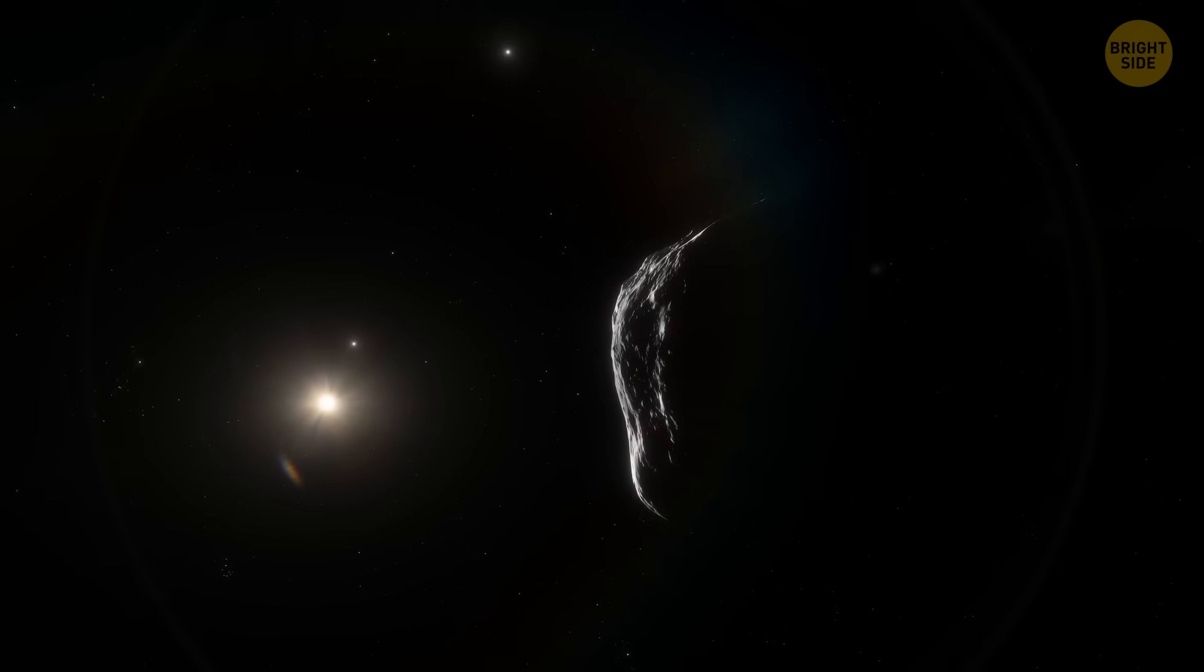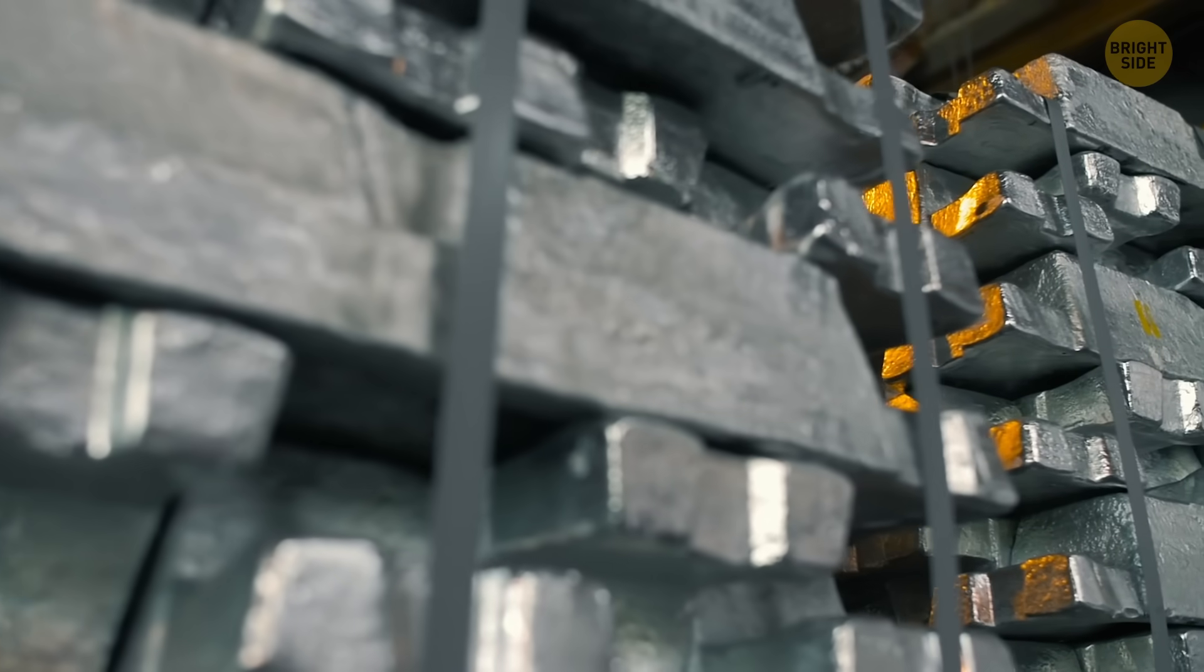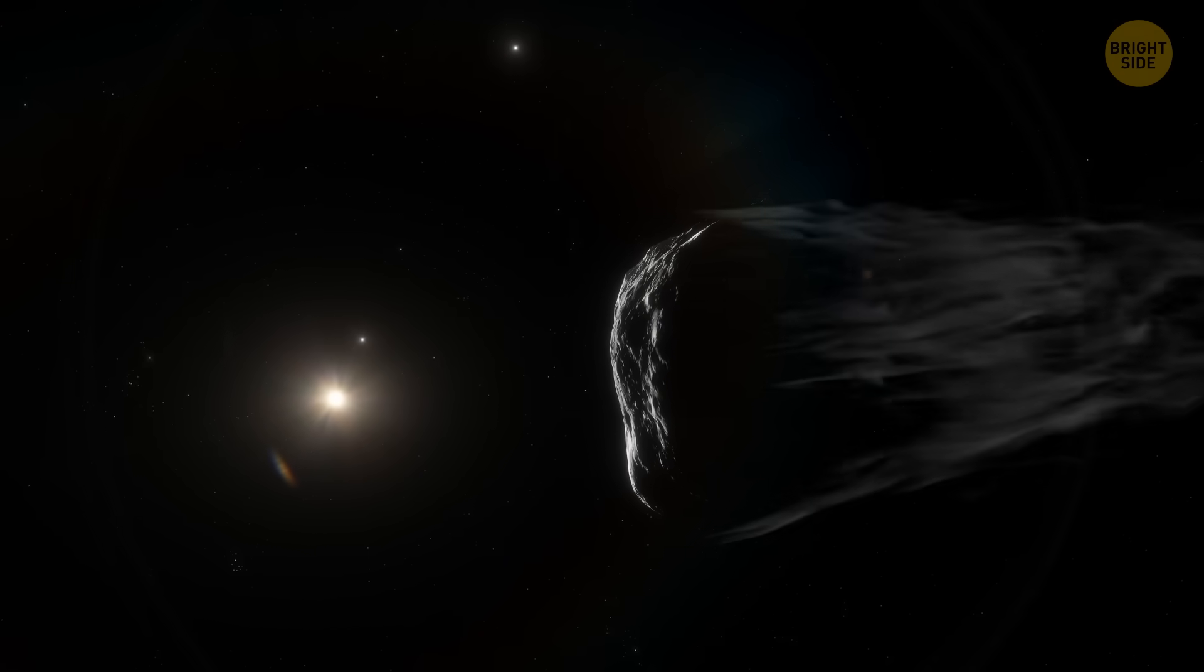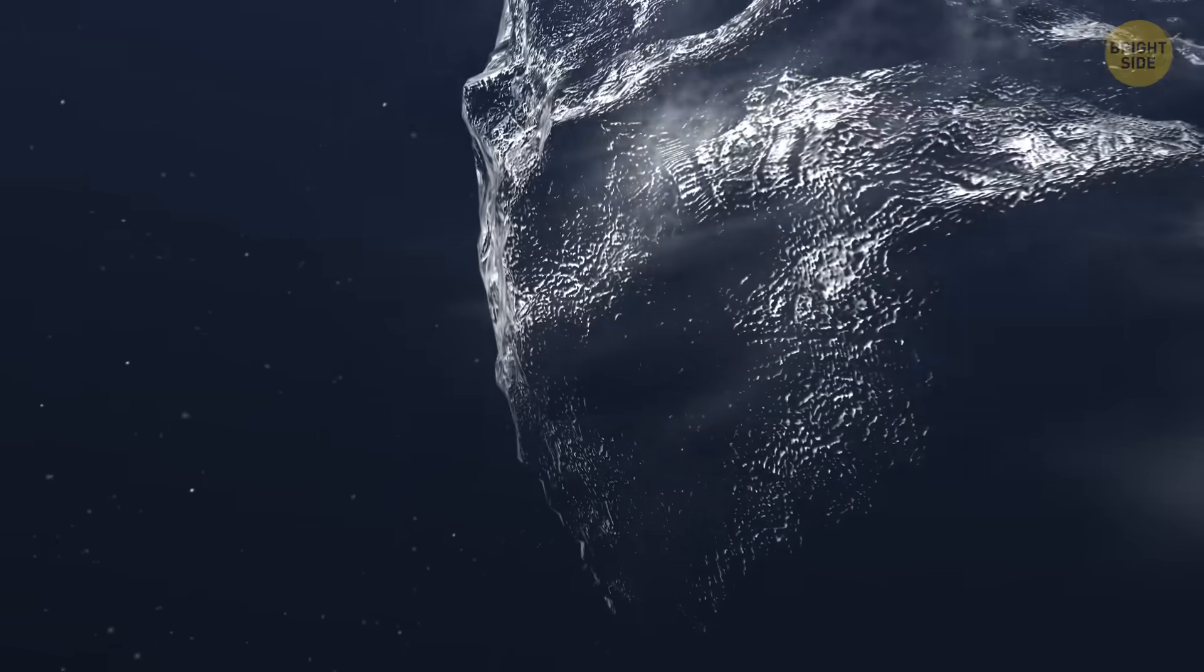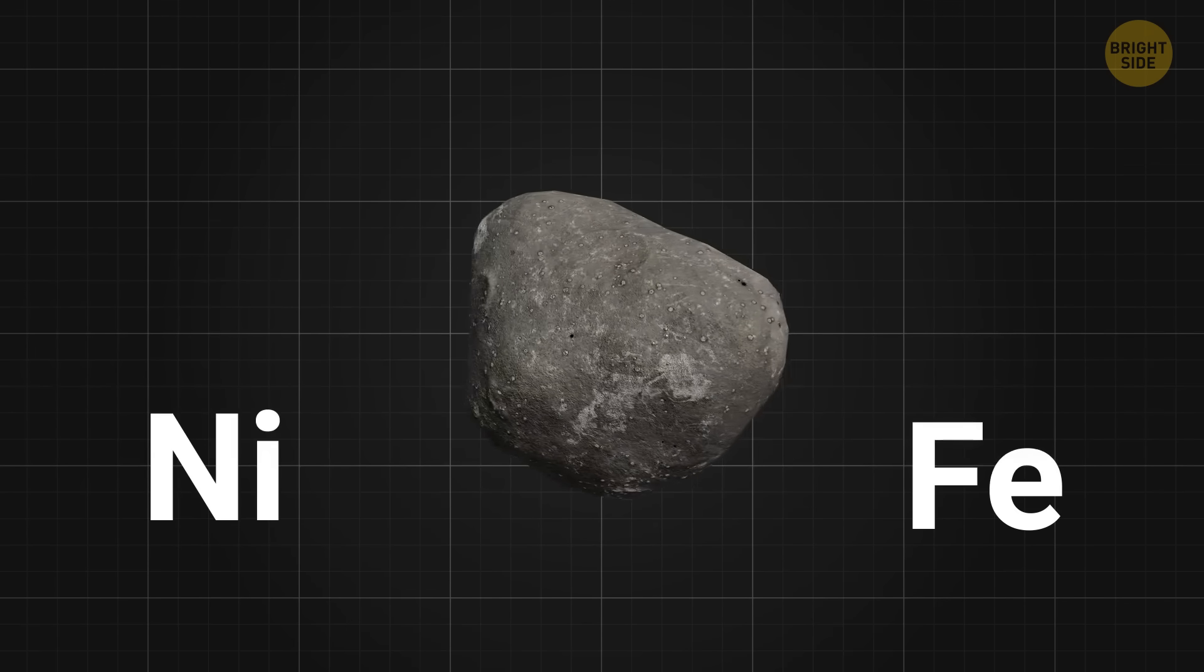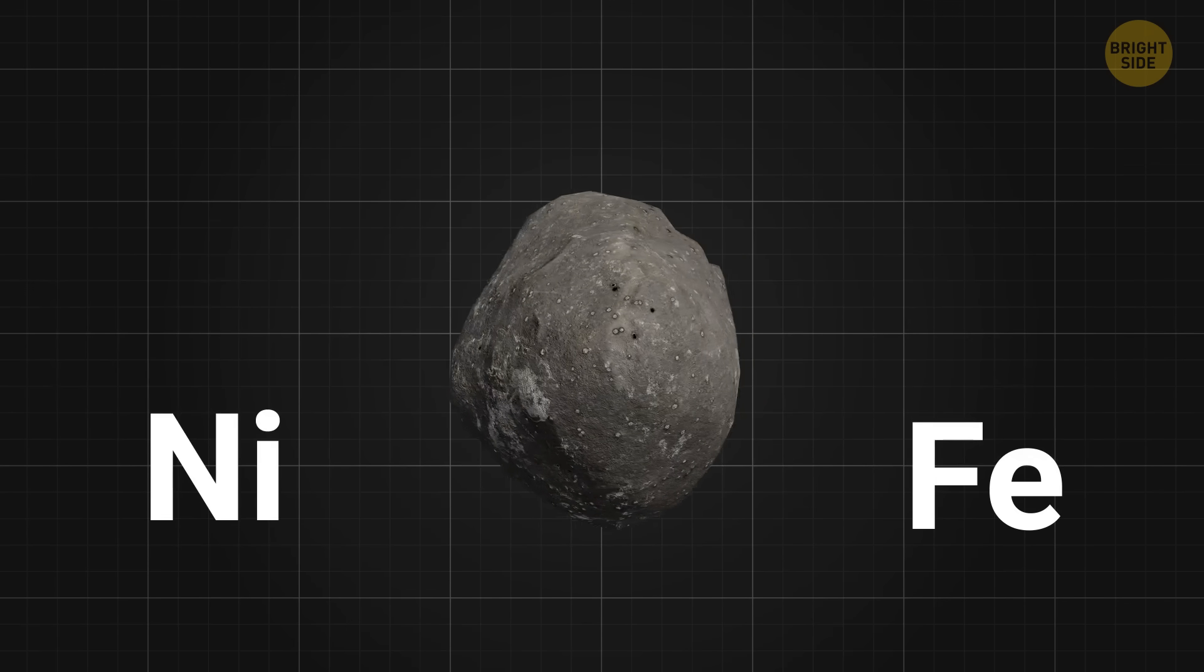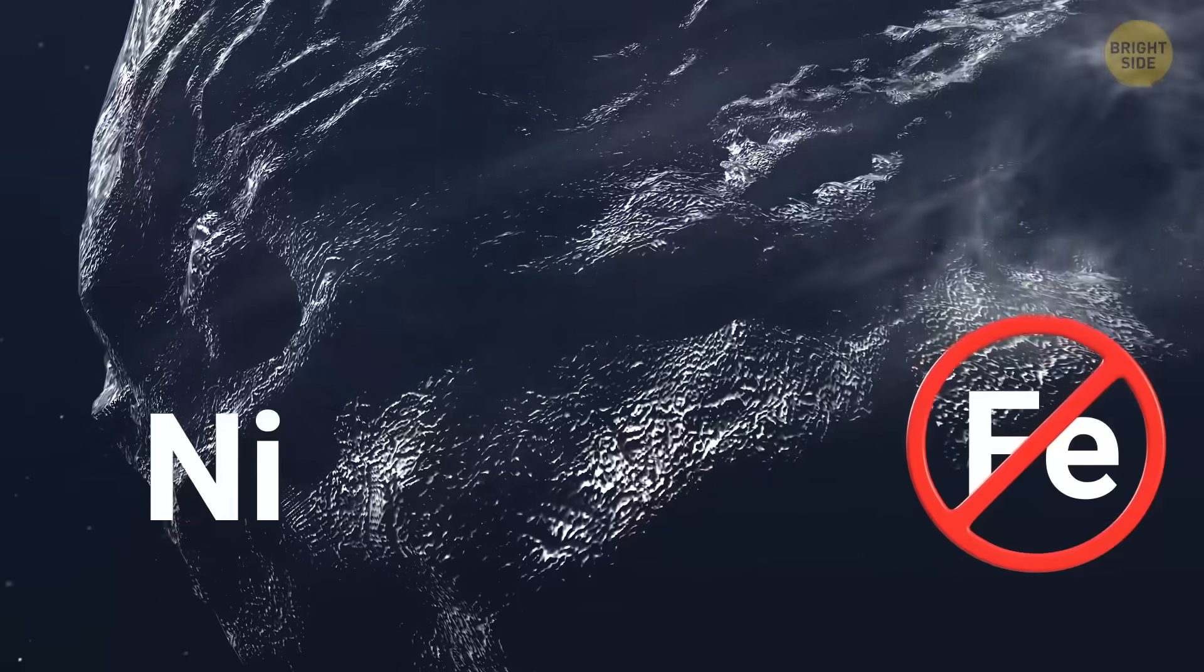And now, the third thing that makes this comet stand out. It seems to be giving off a metal alloy we've basically never seen in nature. So, this comet is releasing a plume that contains nickel, that's normal. What's strange is what's missing, iron. In comets, nickel and iron usually show up in pretty similar amounts. Here, we're seeing nickel, but no clear sign of iron. And that's almost unheard of.